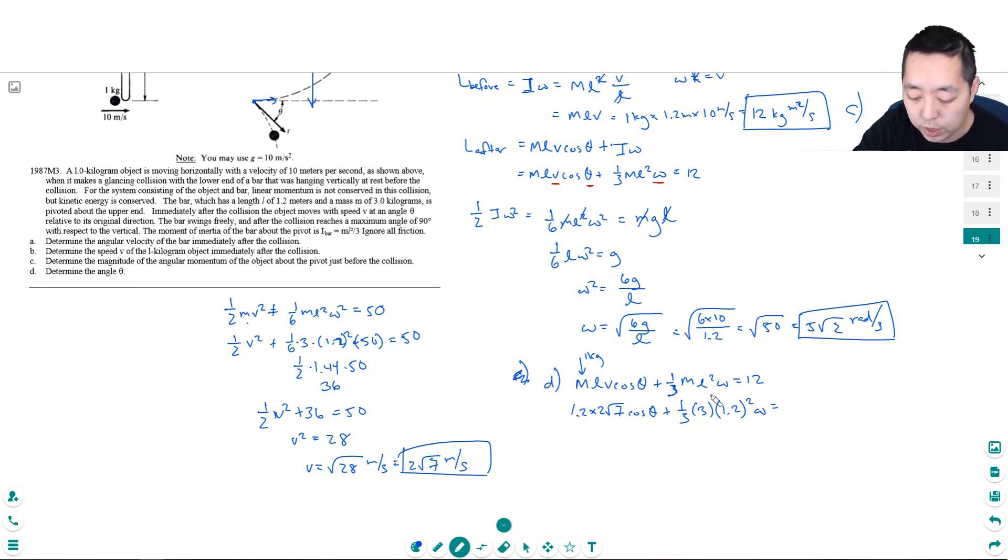Oh, what did we find omega to be? Omega was 5 root 2 is equal to 12. So that becomes 1. That's 1.44. 1.44 times 5 is 7.2? Yeah, 7.2. So this is 2.4 root 7 cosine theta. Now this is just a lot of algebra. Plus 7.2 root 2 equals 12.